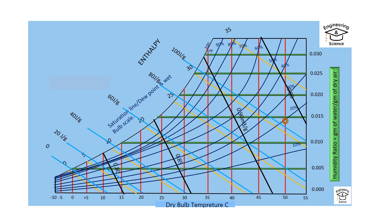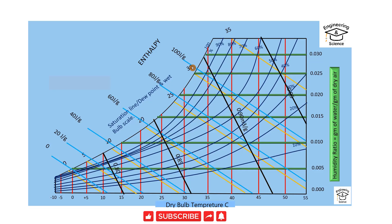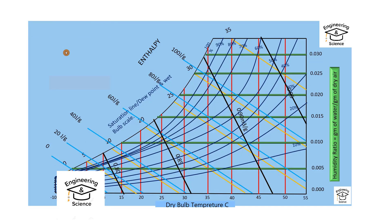The dew point temperature scale represents dew point temperature, which is the same scale as for wet bulb temperature. The black lines represent specific volume, and the white-blue lines represent enthalpy. Now let us solve an example.